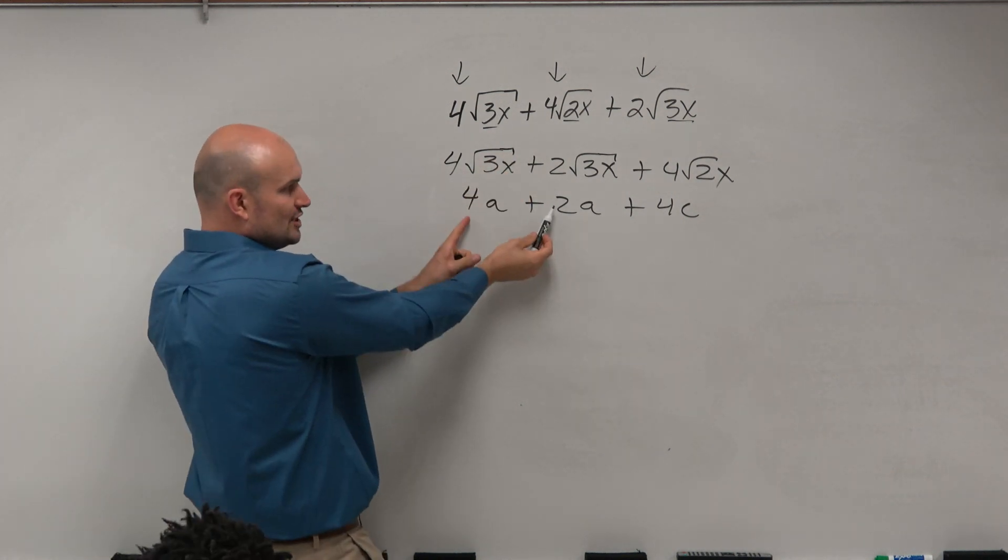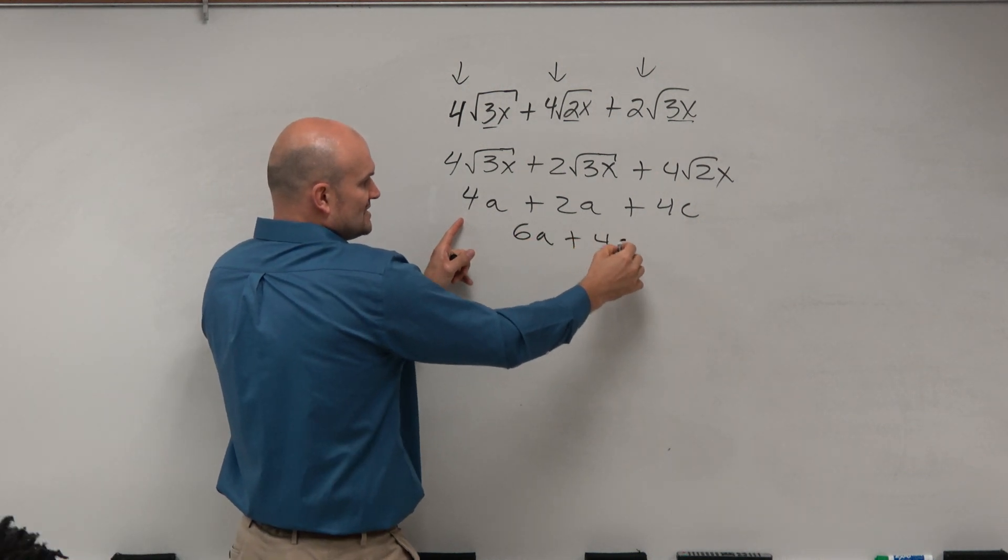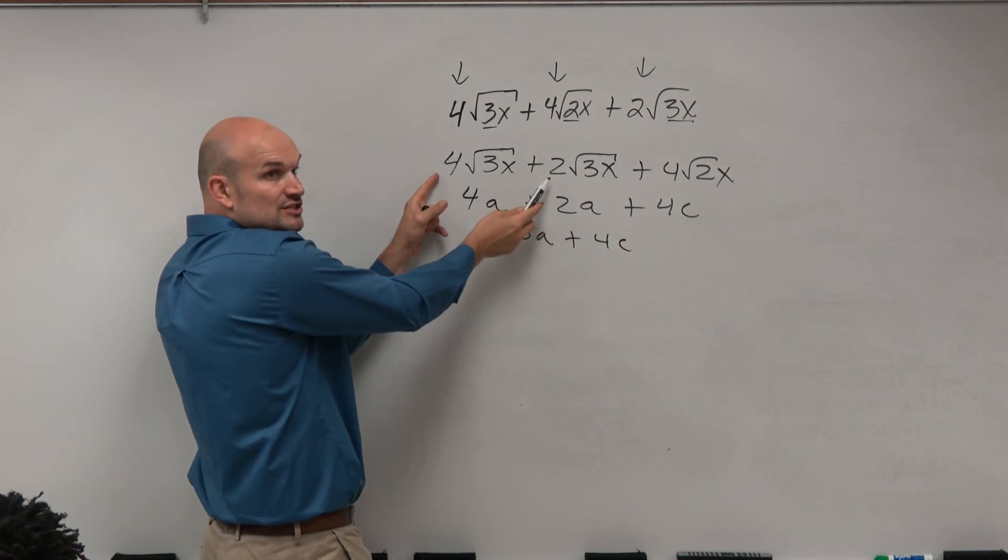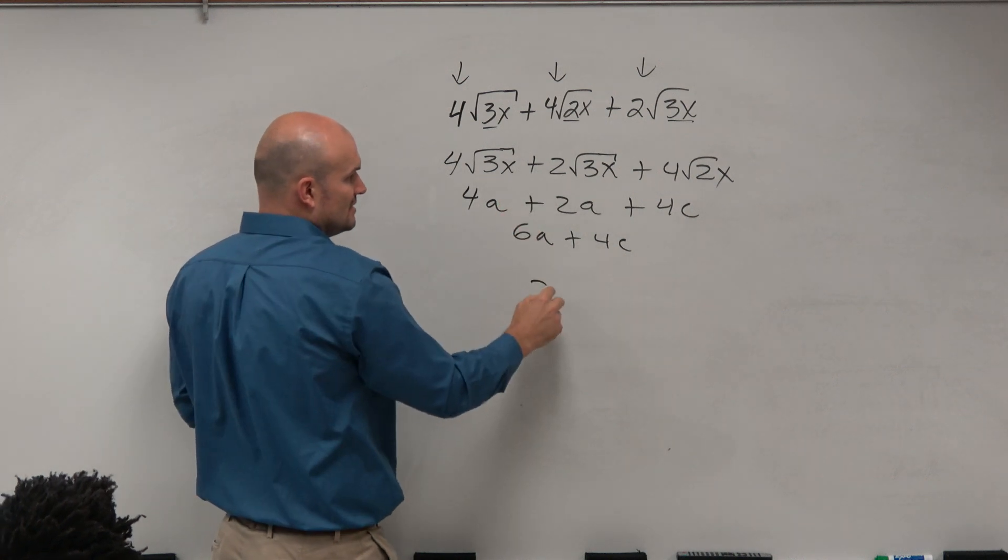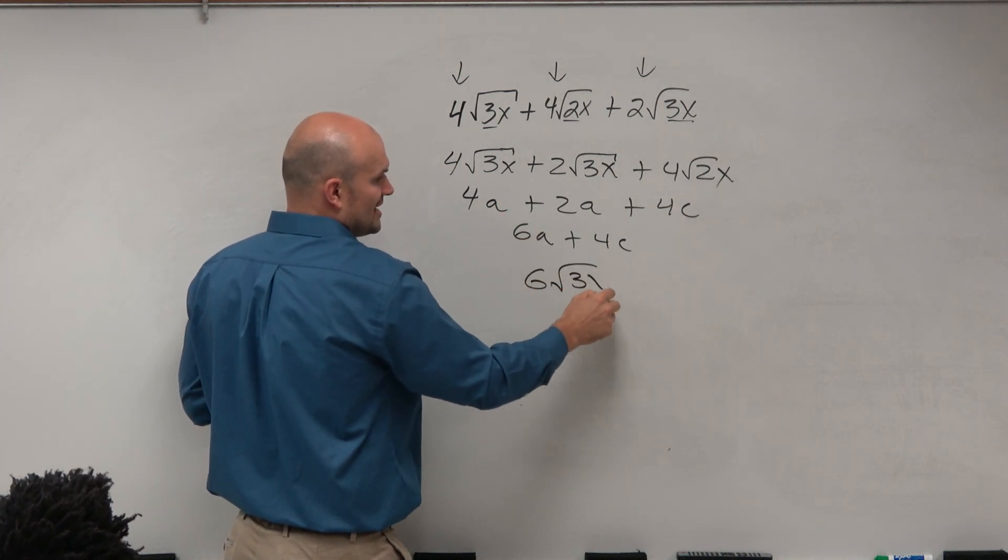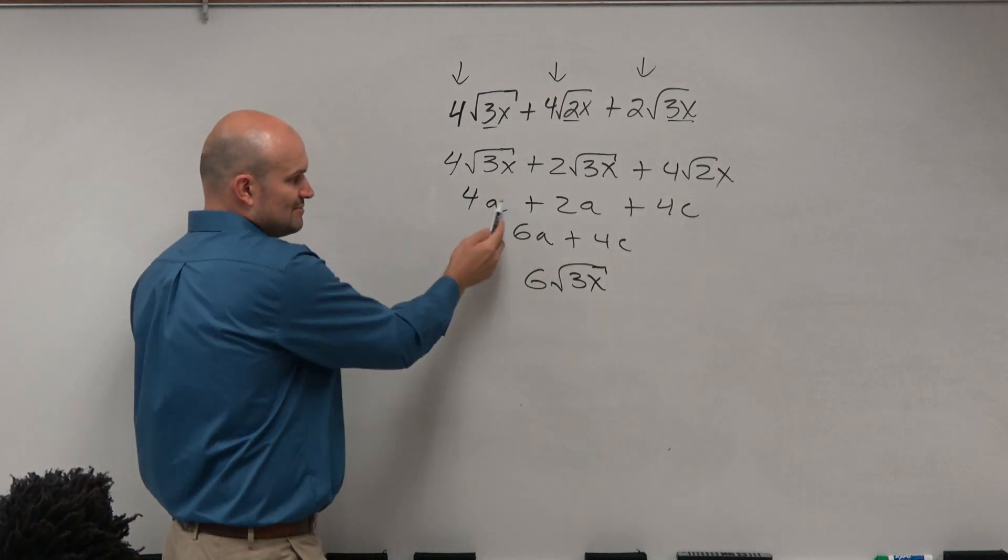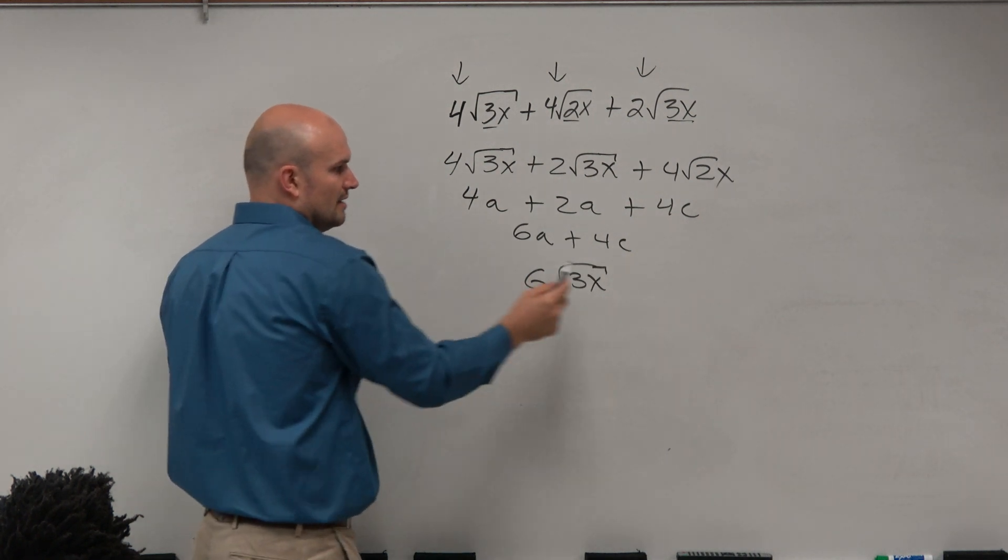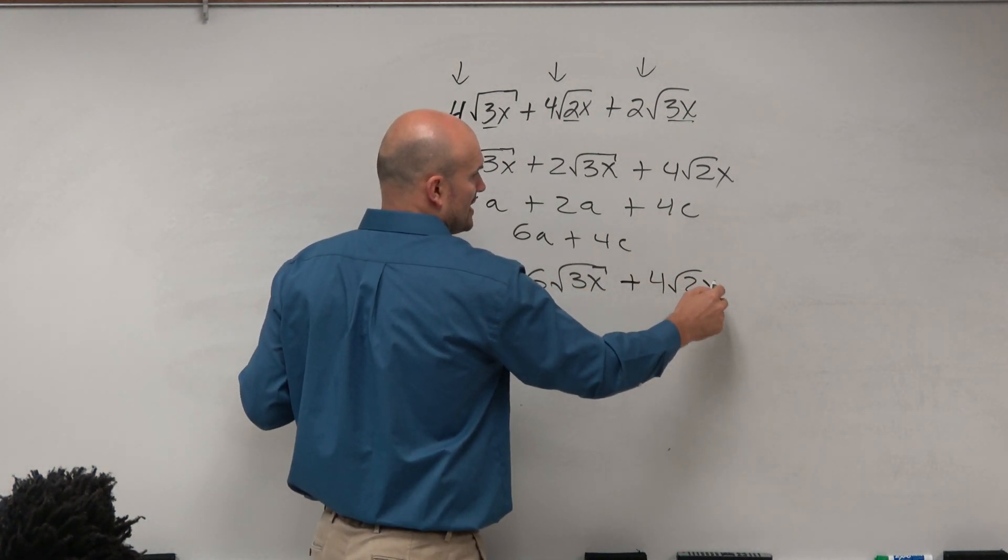So again, just like you would add these to give you 6a plus 4c, you combine the coefficients. So 4 plus 2 is 6√3x. That remains the same, just like the a would remain the same. And then there's nothing I can do with the 4√2x.